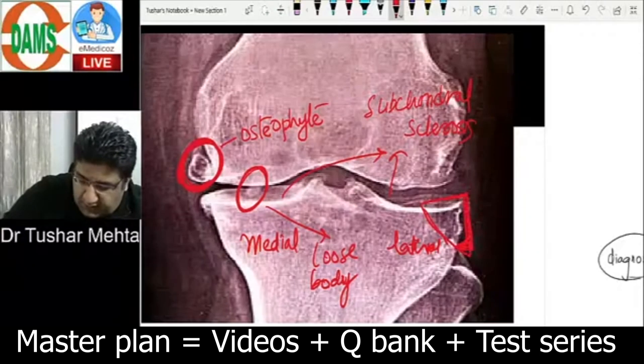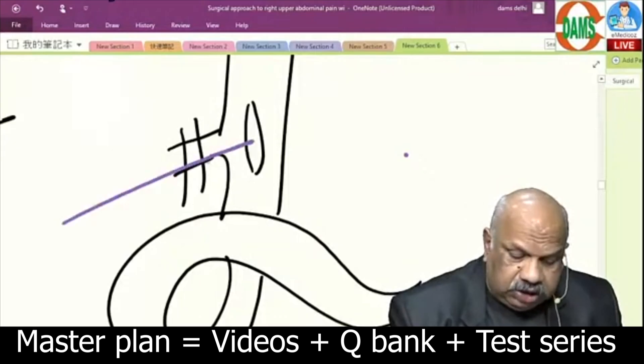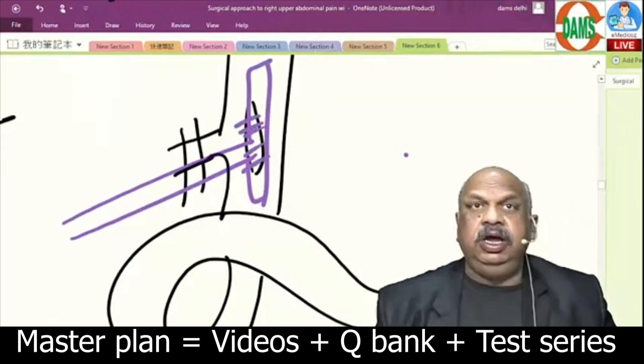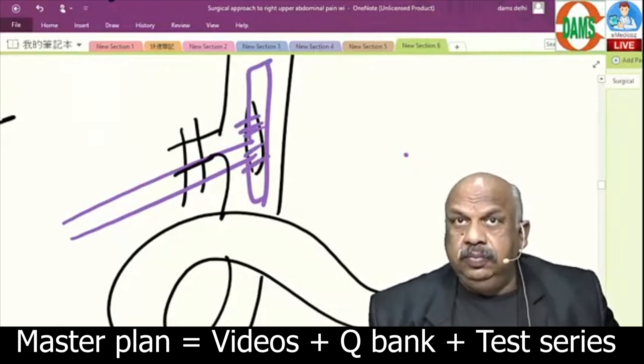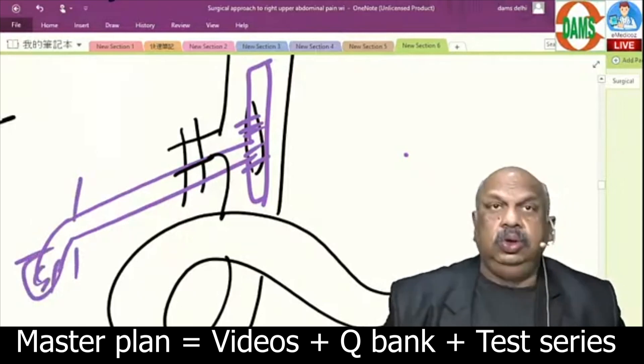This area is what is called an area of subconversus formation. Now I will pass the T-tube through this incision into the CBD and then close on the T-tube. This third limb of the T-tube will come out of the skin which is connected to a urobag.